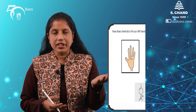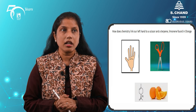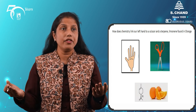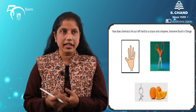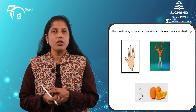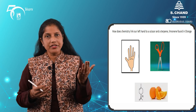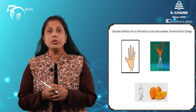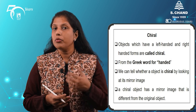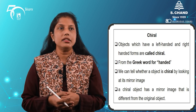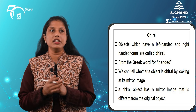All these objects — the left hand, the scissors, and limonene — are examples of molecules or objects which have a left-handed and a right-handed form. Our left hand will not fit into a glove belonging to the right hand. Similarly, our left foot will not fit into a shoe for our right foot. Objects which have a left-handed and a right-handed form are said to be chiral. It comes from the Greek word meaning 'handed.' A chiral object will have a mirror image that is different from the original.